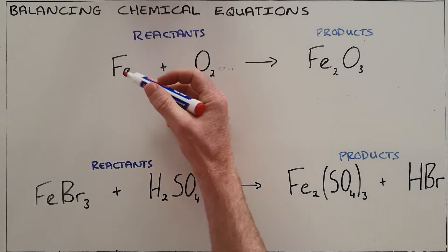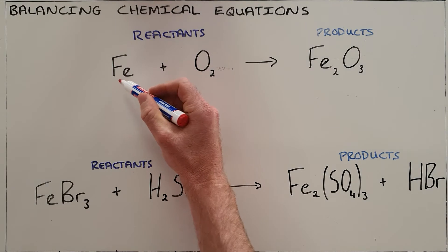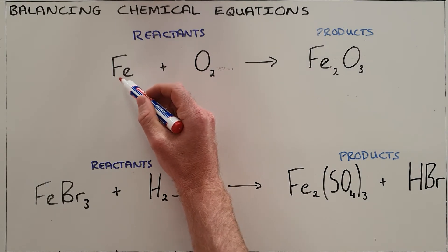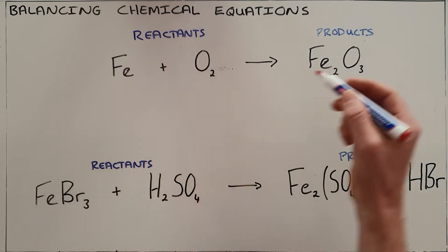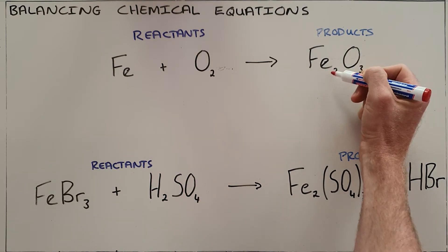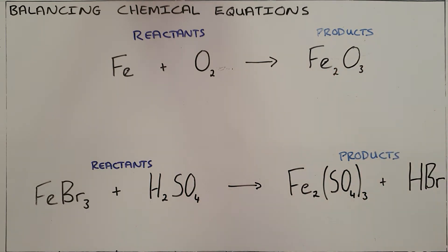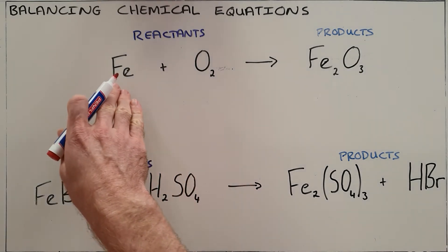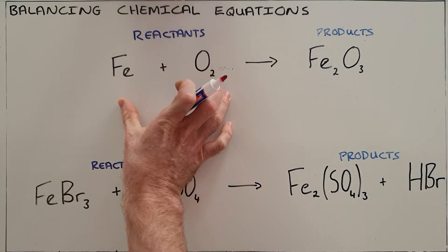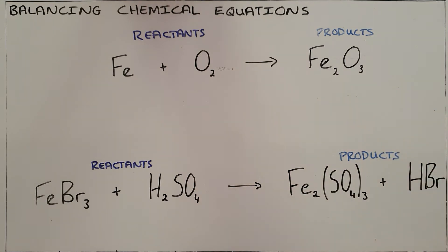As an example, in this reaction there is one iron atom in the reactants, but in the product we have two iron atoms present, which is obviously not possible because it is not possible to create matter. So in order to complete this reaction we need to balance it to ensure that there are the same number of each element present in the reactants as there are in the products.